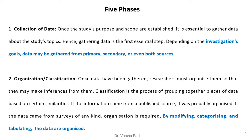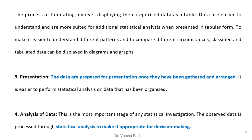The second stage is organization. Once data have been gathered, researchers must organize them to make inferences from them. Classification is the process of grouping data based on certain similarities. If data came from surveys or private sources, organization is required by modifying, categorizing, and tabulating. Tabulating involves displaying the categorized data as a table, making it easier to understand and suited for further statistical analysis.